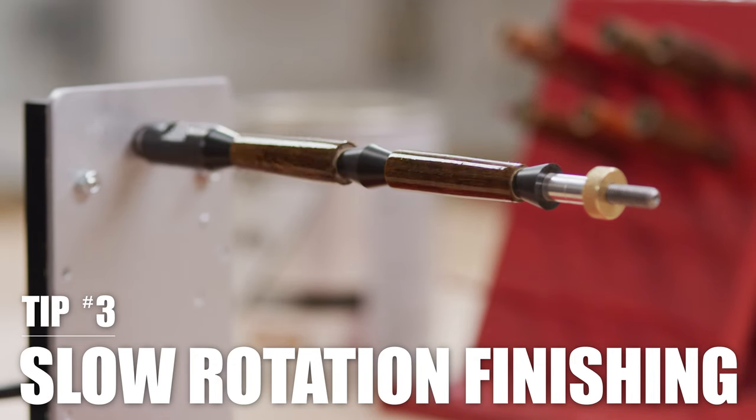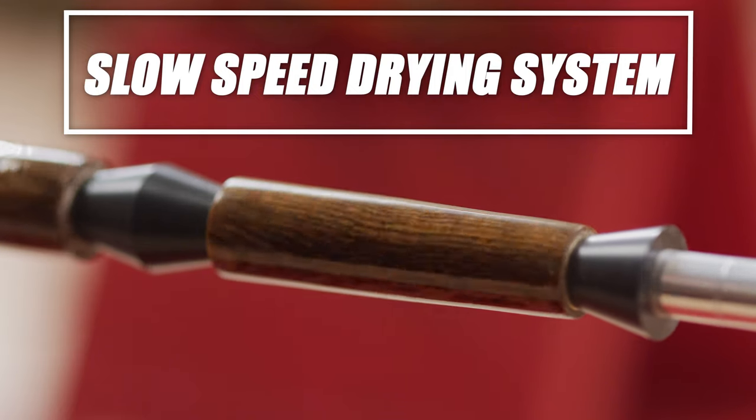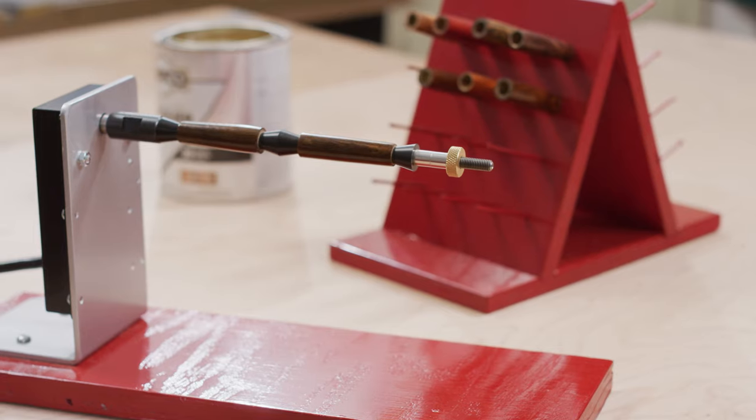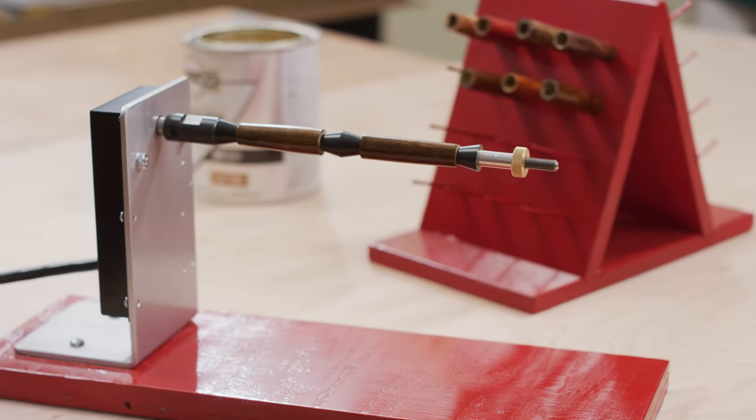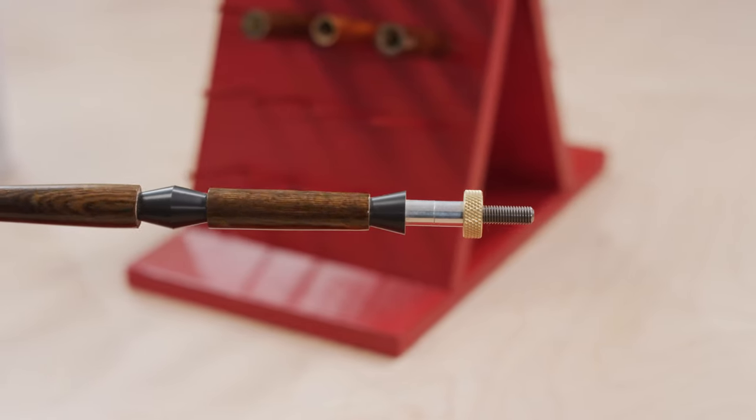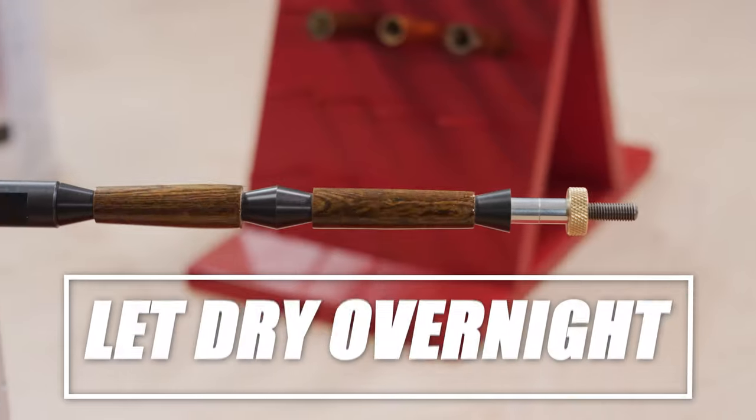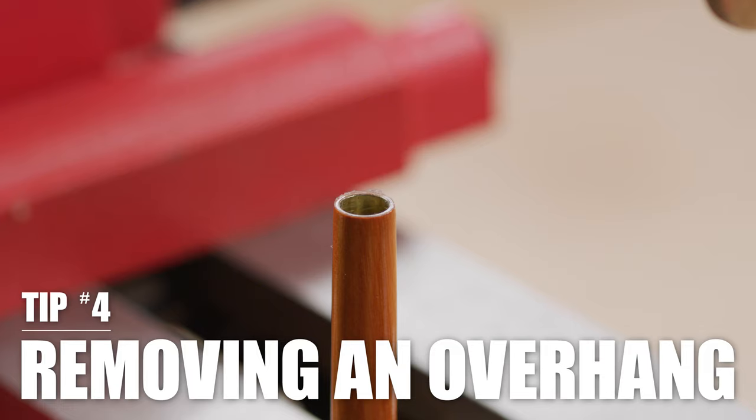If you're a fan of slow-drying finishes like polyurethane, brush-on lacquers, epoxies, or tung oil but hate the drips that can occur, consider a slow speed pen blank drying system. Simply mount the mandrel to the motor, slide the blanks onto the mandrel, and apply the finish. Running at only 20 RPM, the finish dries evenly without drips or runs. Let the finish dry overnight and apply additional coats if needed.